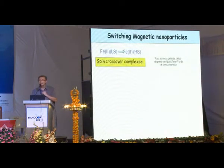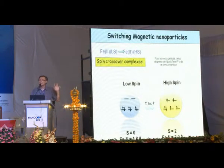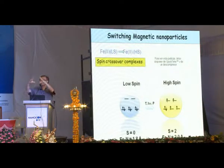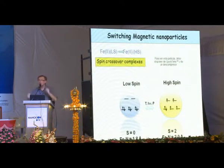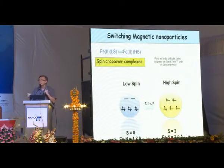One interesting example is spin crossover complexes. Iron(II) is a d6 metal ion and can be in a low spin state or a high spin state. In the low spin state the system has a smaller size, and in the high spin state it has a bigger size. In an octahedral ligand field you have these two configurations, and with temperature, light, or pressure you can switch between low spin and high spin — giving you a molecular switch that in the solid state can have cooperative behavior.